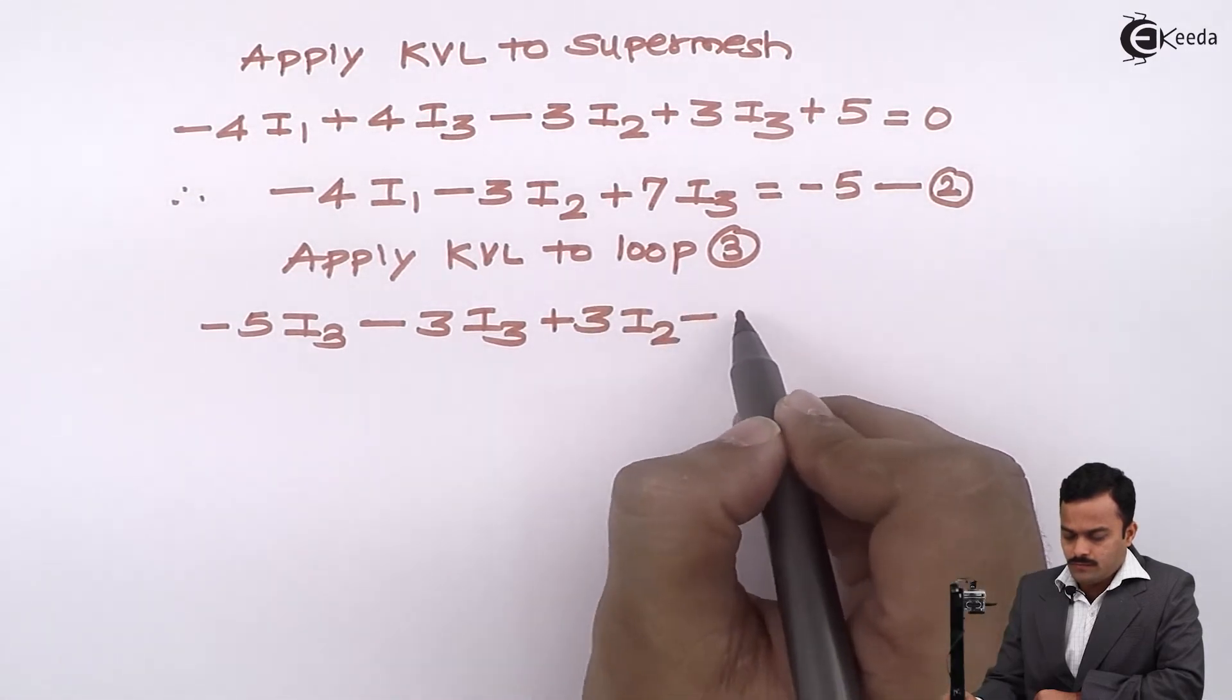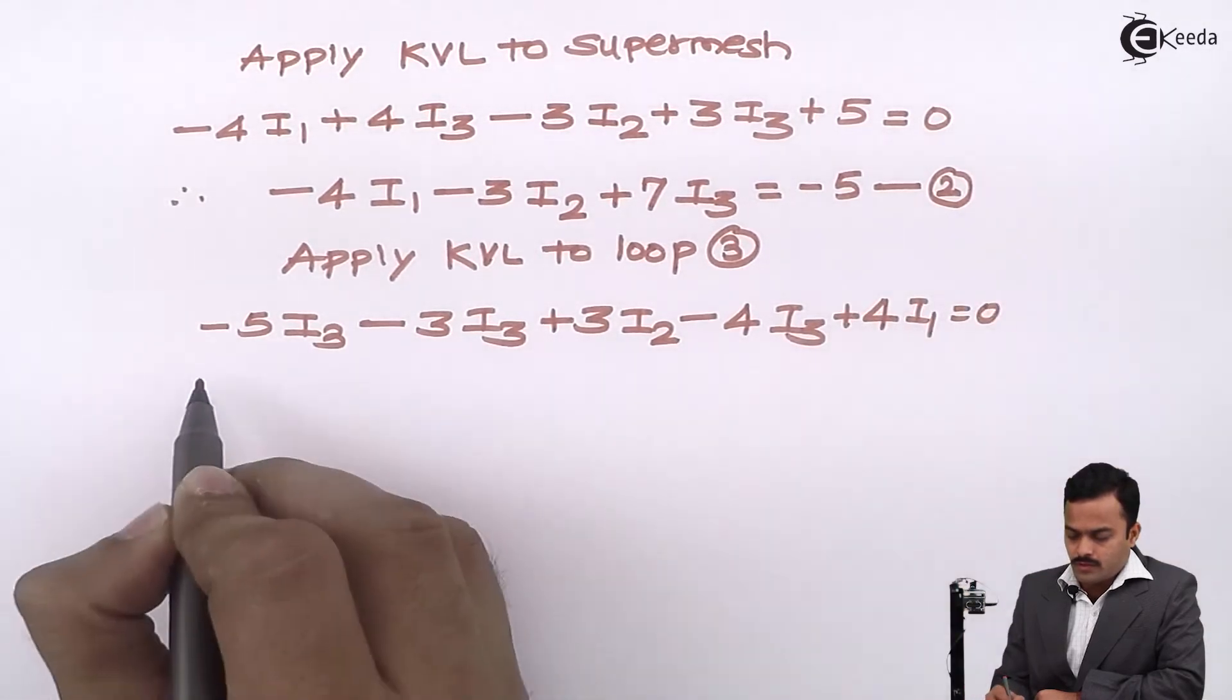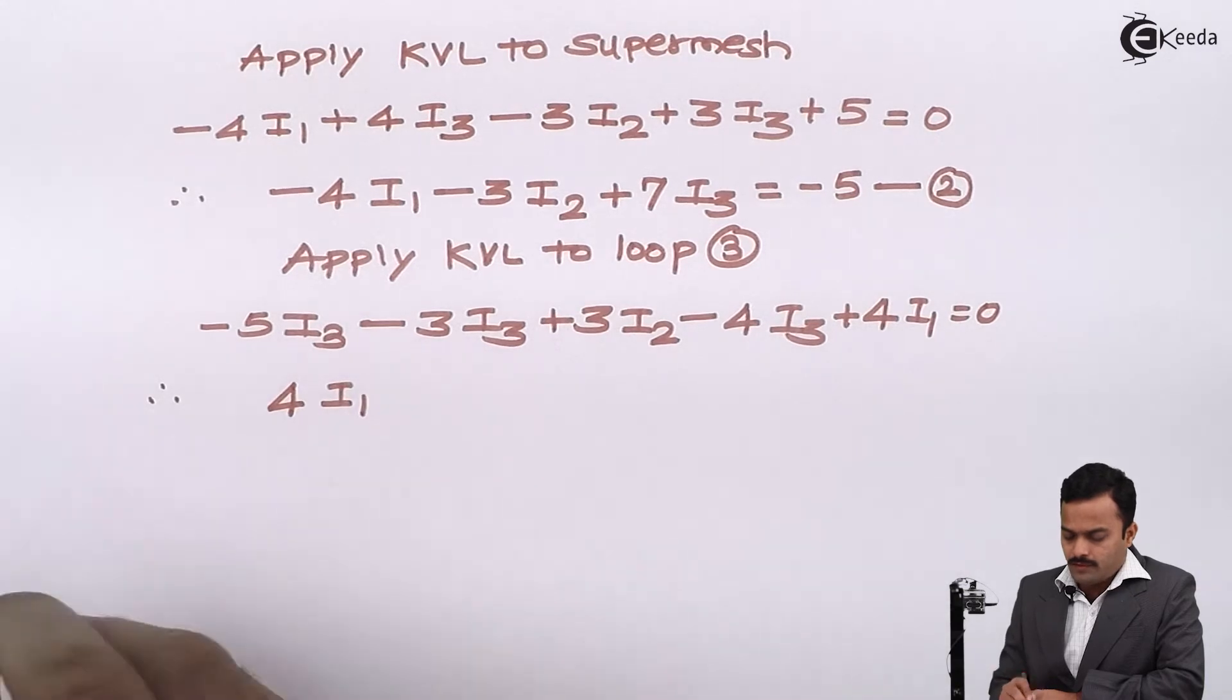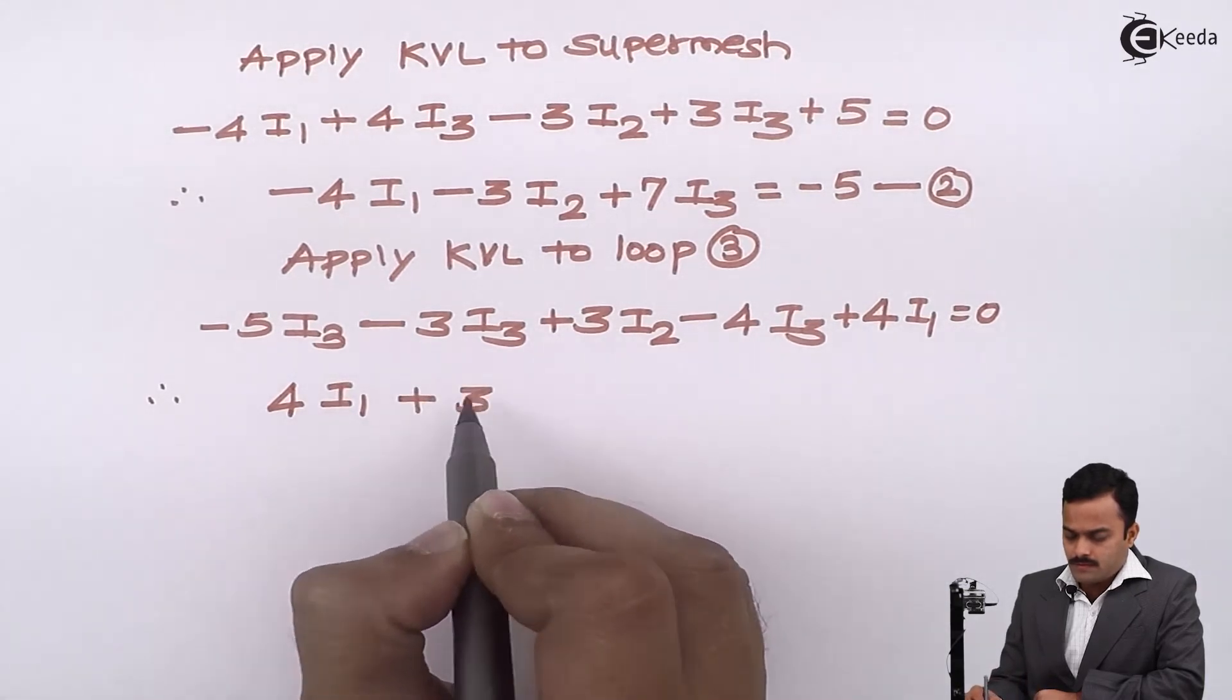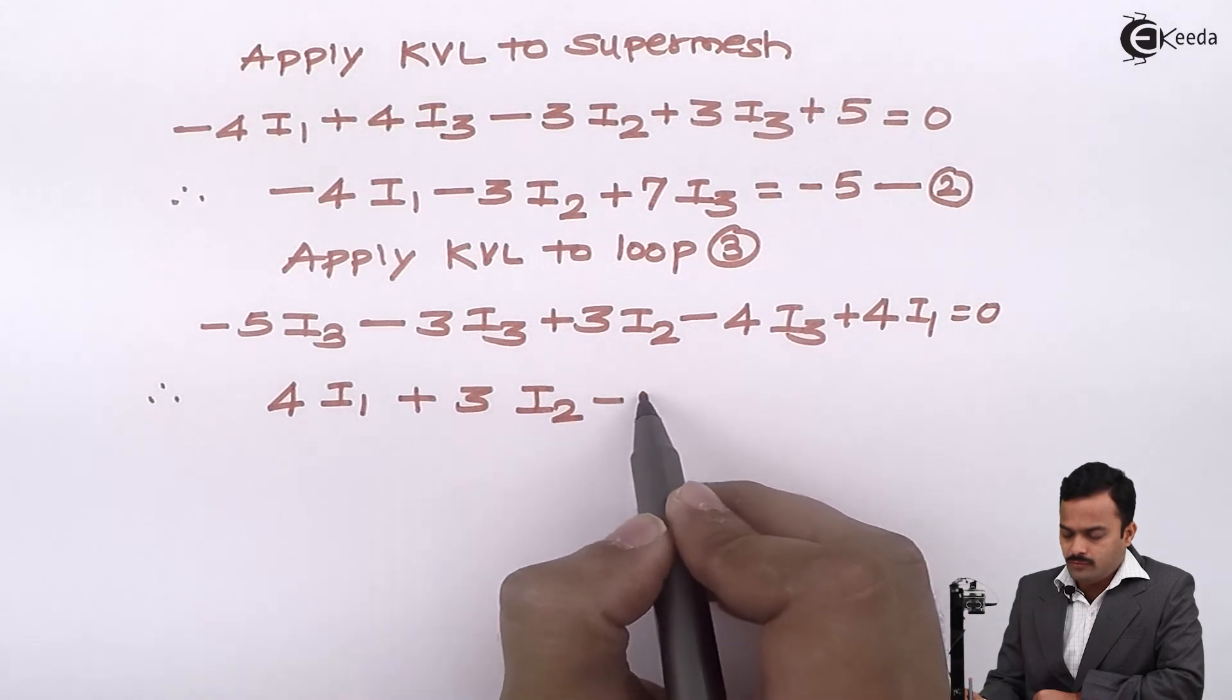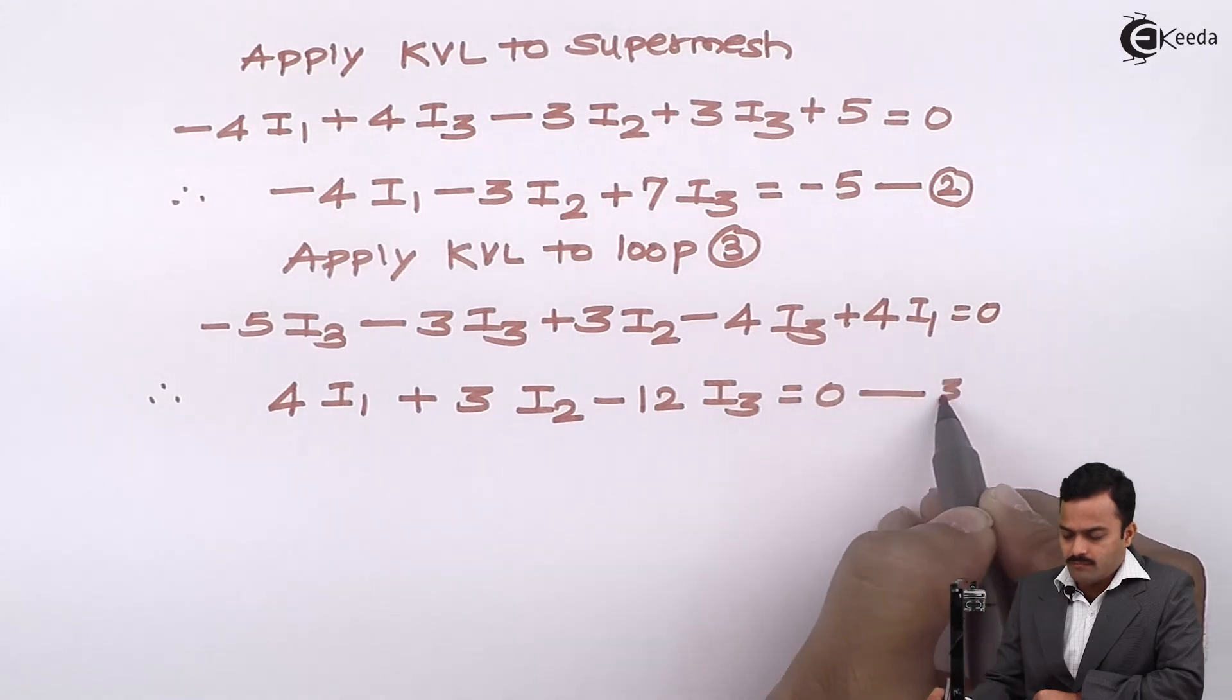And after simplifying, I will get 4 I1 plus 3 I2 minus 5 minus 3 minus 4 will give you minus 12 I3 equal to 0, equation number 3.